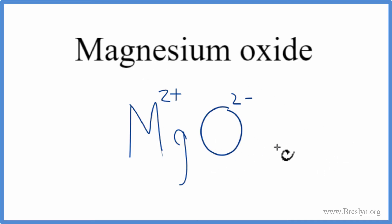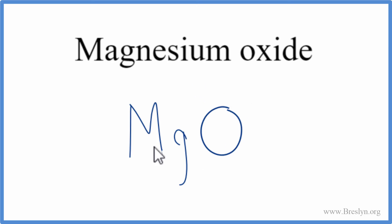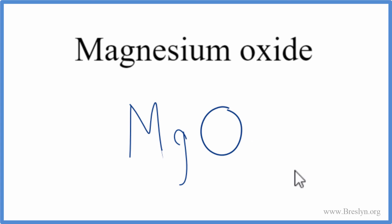Let's remove the +2 and -2. And that's it — that's the formula for magnesium oxide: MgO. This is Dr. B with the formula for magnesium oxide, and thanks for watching.